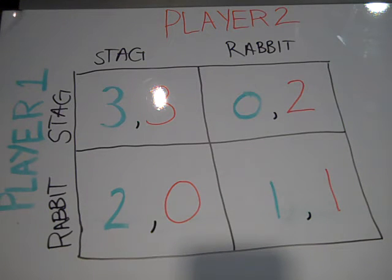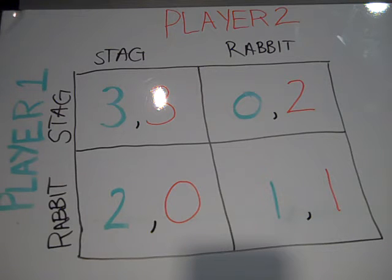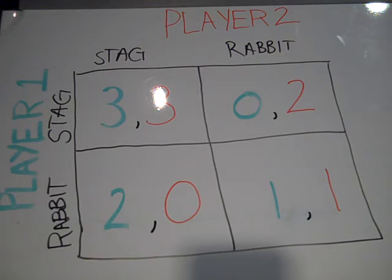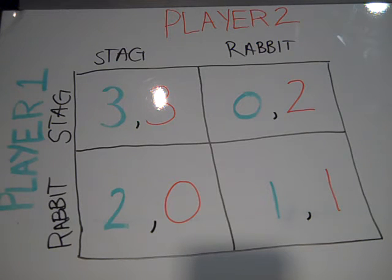When we look at the matrix, you can see that if both players hunt the stag, they each go home with three pieces of meat. If player one hunts the stag and player two hunts the rabbit instead, player one would have zero because they need both of them to hunt the stag, and player two would go home with two, and vice versa. If both player one and player two hunt the rabbit, they'd each go home with one. Or if player two decided to hunt the stag while player one hunted the rabbit, player two would go home with zero and player one would go home with two rabbits.